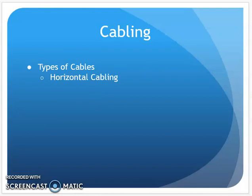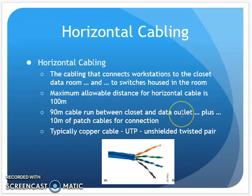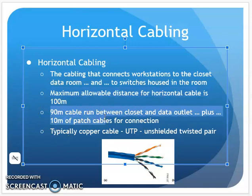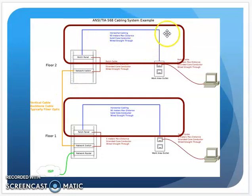The next type of cabling is horizontal cabling. This is the cable that goes from the work area where the user is, back to the closet and the patch panel. Unshielded twisted pair cabling has a maximum allowable distance of 100 meters. After 100 meters the signal gets too weak and you start losing data integrity. Typically, horizontal cabling is limited to 90 meters, leaving 10 meters for patch cables on each end — about 5 meters on each side — for a total of 100 meters max.